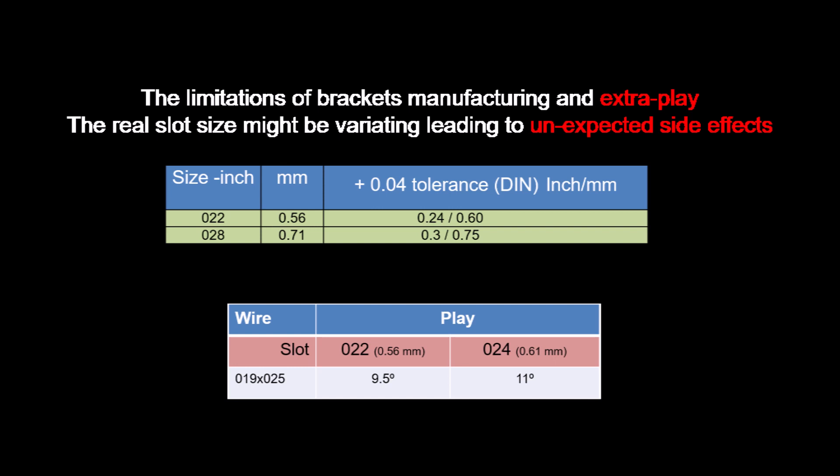Manufacturing technologies have a huge impact on the accuracy of brackets and wires. Sometimes manufacturers intentionally change some parameters to make clinical use easier, but not necessarily improve the treatment outcome. Technological limitations are known and some deviations are acceptable by regulatory laws. The European DIN standard, for example, allows a tolerance of up to 0.04 millimeters. If we consider just half of that, we can see that with a 0.019 by 0.025 stainless steel wire in a 0.022 by 0.028 slot, the torque loss will increase from 9.5 to 11 degrees.